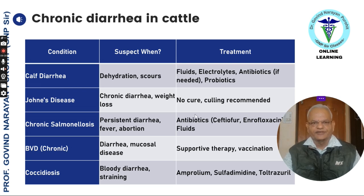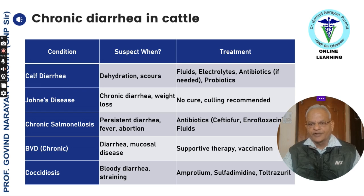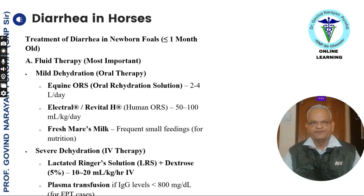In adult cattle, chronic salmonellosis presents with persistent diarrhea and fever with abortion. Antibiotics like ceftiofur and enrofloxacin can be used. Bovine virus diarrhea causes mucosal disease, and supportive therapy along with vaccination is the answer. For coccidiosis, there will be bloody diarrhea, and amprolium, sulfadimidine, and toltrazuril are the drugs of choice.